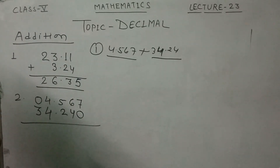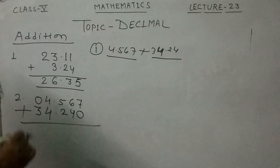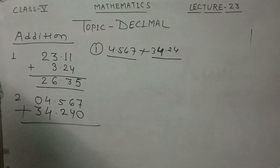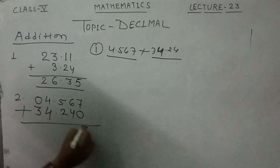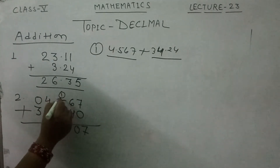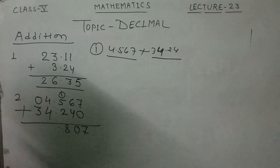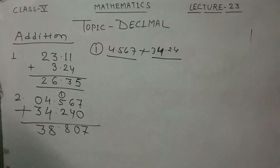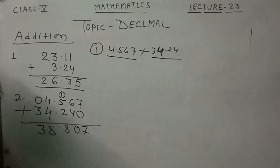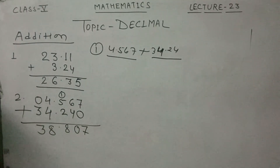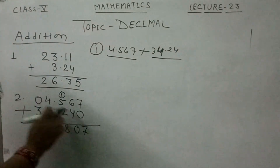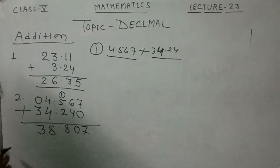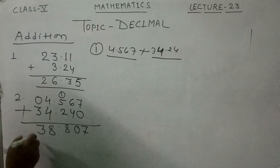Then add using column addition, remembering to put the decimal point in the answer. 7 plus 0 is 7. 6 plus 4 is 10, write 0 carry 1. 1 plus 5 plus 2 is 8. Put the decimal point. 4 plus 4 is 8. 0 plus 3 is 3. The answer is 38.807.